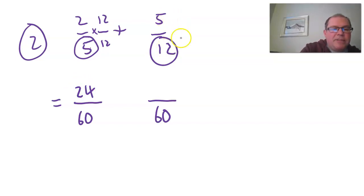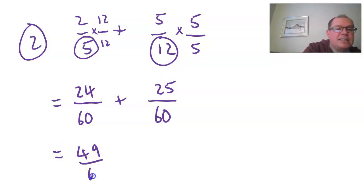Now let's do the same for five twelfths. Well, I've multiplied the bottom by five. 12 times five is 60. So I've got to multiply the top by five as well. So five times five is 25. So now I'm counting the same thing. Sixtieths and I've got 49 sixtieths.